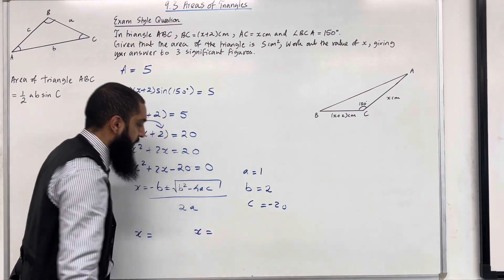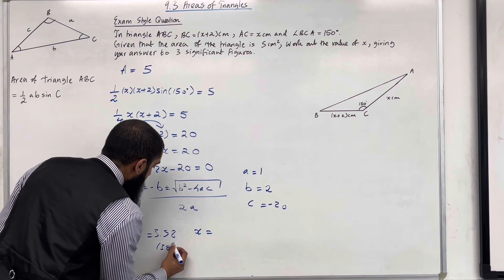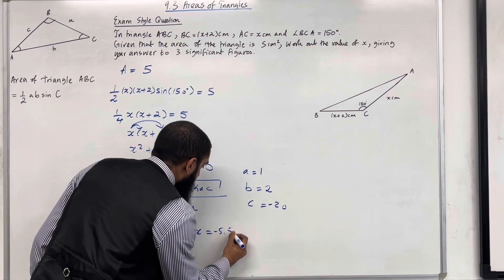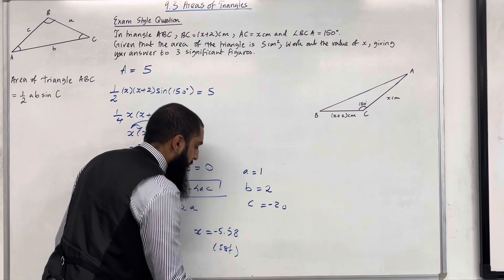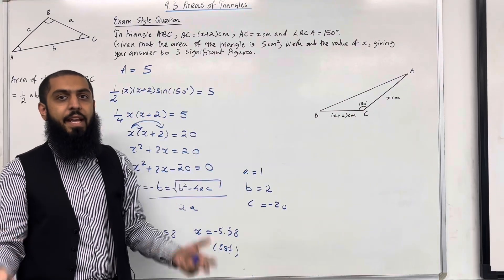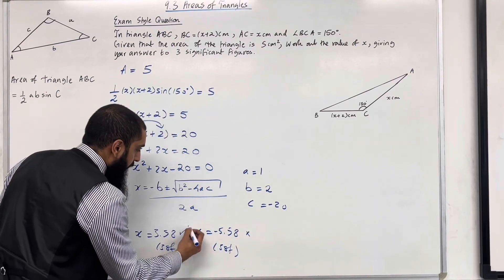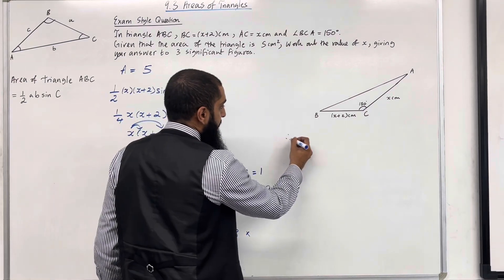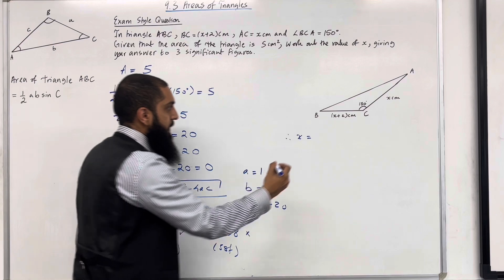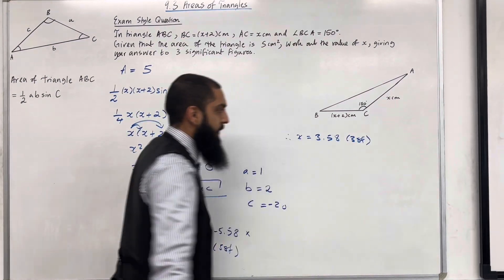So the two solutions are 3.58 to 3 significant figures and minus 5.58 to 3 significant figures. But we know that x represents a length and a length cannot be negative. So we have to reject this solution and we have to accept this particular solution. Therefore, the value of x to 3 significant figures is 3.58.